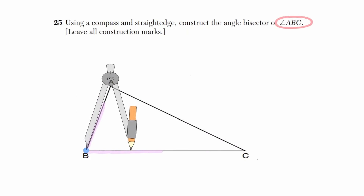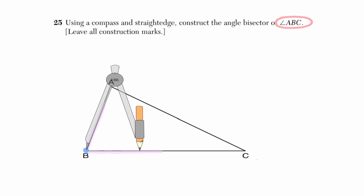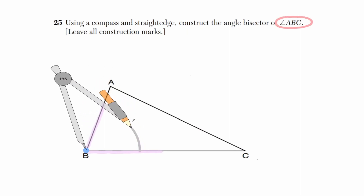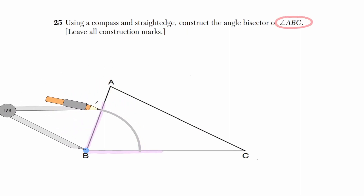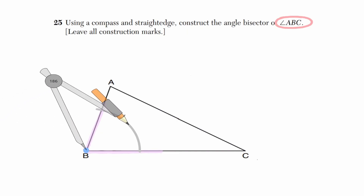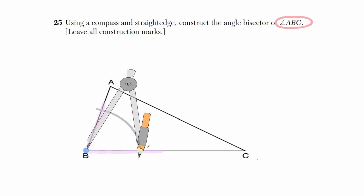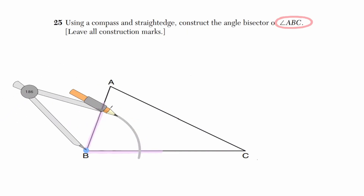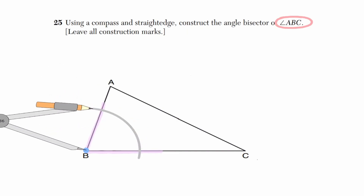Now we're going to open our compass a little bit because we are going to create an arc. What we would like to do is intersect our triangle at two different locations — at this point over here and at this point over here.